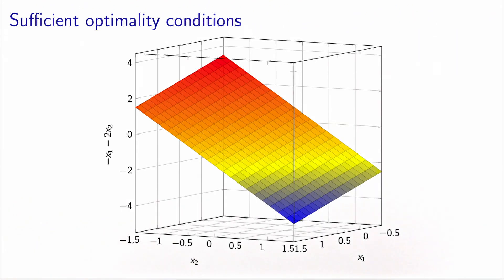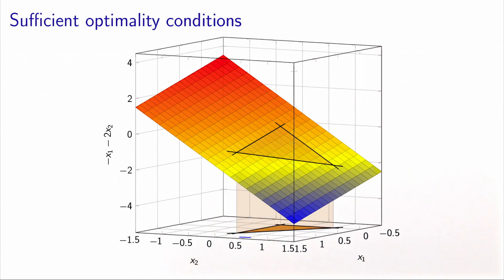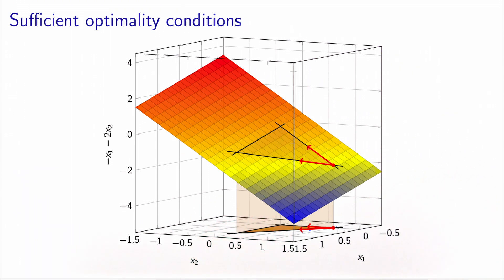Let's illustrate this on a simple example. We have a problem with two variables x1 and x2, and the objective function is −x1 − 2x2, represented by a plane. The constrained polyhedron is shown on the floor projected onto the function. At this vertex, there are two basic directions — one along each adjacent face. We can see that the function is increasing along both directions; algebraically, the reduced costs are positive, so we are at a minimum.